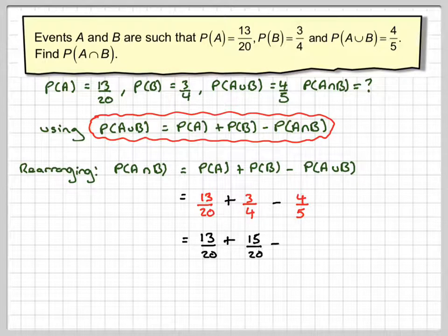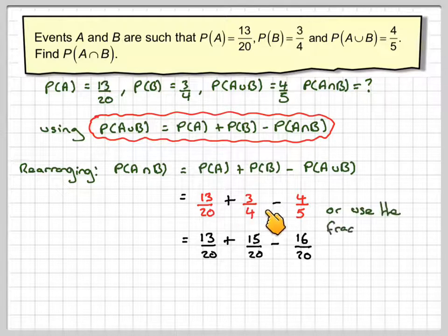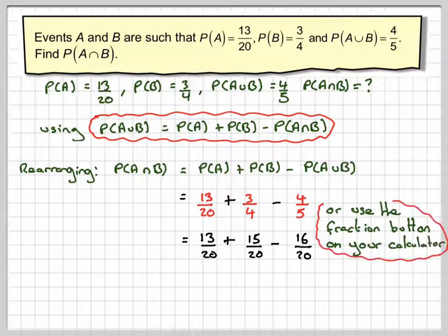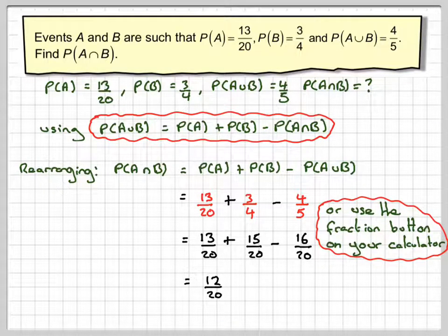You get 13 over 20 plus 15 over 20 minus 16 over 20, or you just use the fraction button on your calculator, and you'll get an answer of 12 out of 20, which cancels down to 3 out of 5. If you do this directly, you'll get that answer.